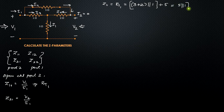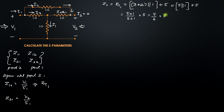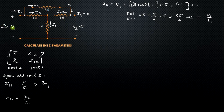Solving: 5 parallel 1 equals 5 × 1 divided by (5 + 1), which is 5/6. Adding 5 gives 5/6 + 5 = 35/6 ohms. So Z11 = 35/6 ohms. By simply calculating the impedance offered from port 1, we can calculate Z11.